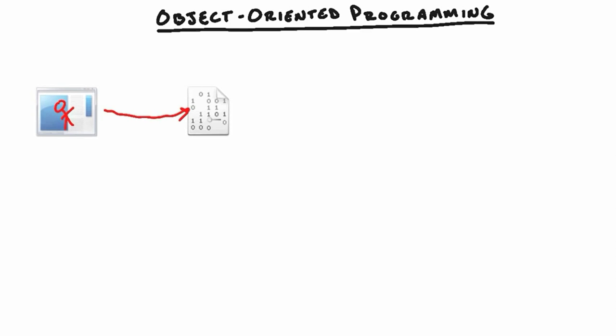A couple of months down the road, the application works great — but then the boss says 'I need another employee application, but a little bit different.' So we build another front end, and half the code we need is already in the first project. What do we do? We open that project, copy all that code out, and paste it into the new application.